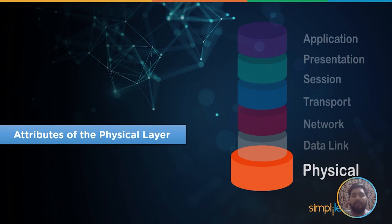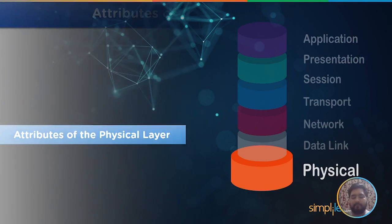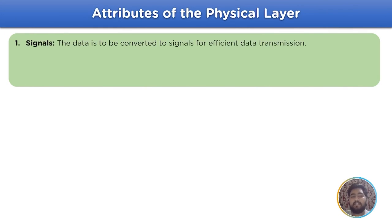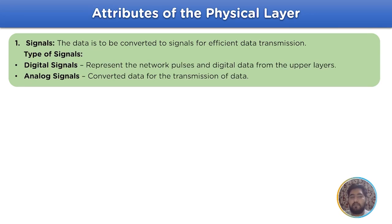Now, let's move on to the attributes of the physical layer. The physical layer has multiple attributes which it applies in the OSI model. The first is signals. The data is to be converted to signals for efficient data transmission where it has two different types. Digital signals represent the network pulses and digital data from the upper layer, whereas the analog signal is converted data for transmission of the model.